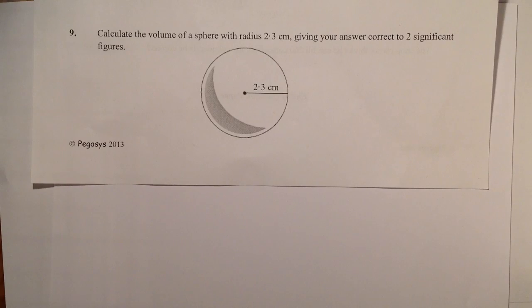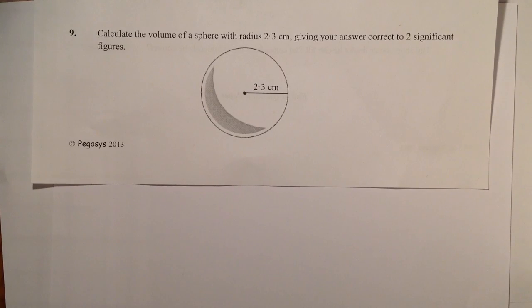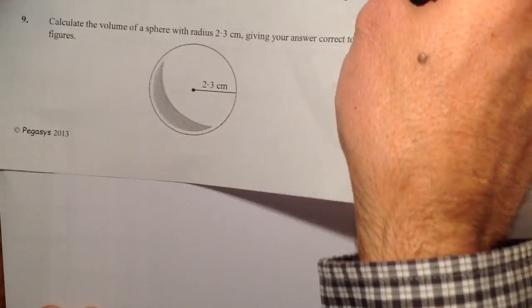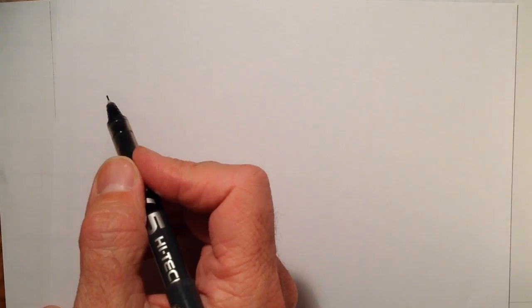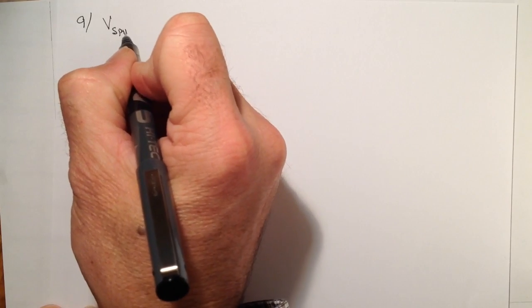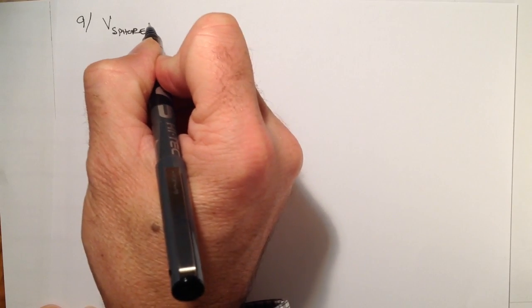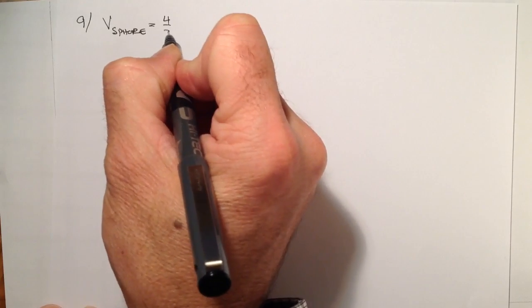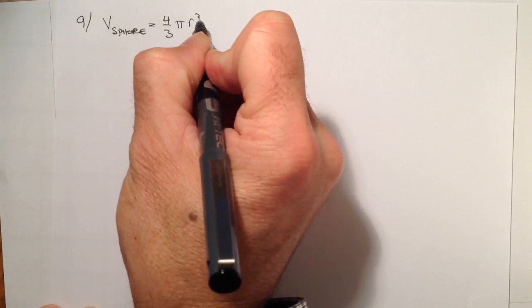First question, question 9: Calculate the volume of a sphere with radius 2.3 centimetres, giving your answer correct to two significant figures. The first thing I'm going to do is look at my formula sheet and find the formula for the volume of a sphere, which is equal to 4/3 π r cubed.